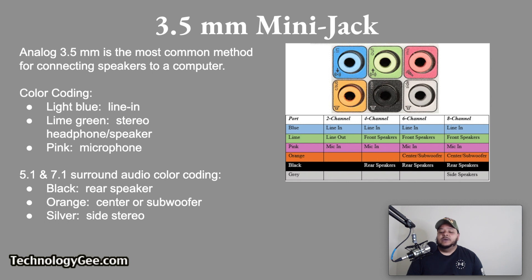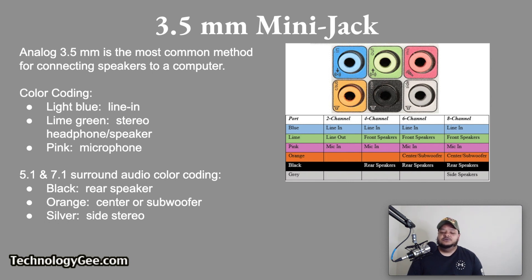Some systems add the following to provide support for 5.1 and 7.1 surround audio: a black connection for a rear speaker, an orange connection for a center speaker or subwoofer, and a silver connection for side stereo. So just think of your surround sound system.